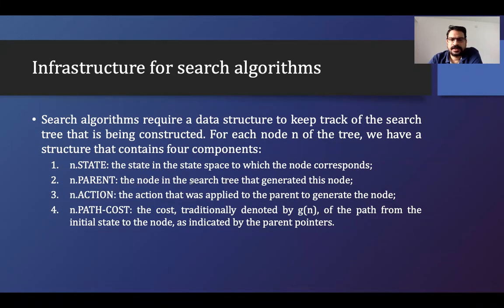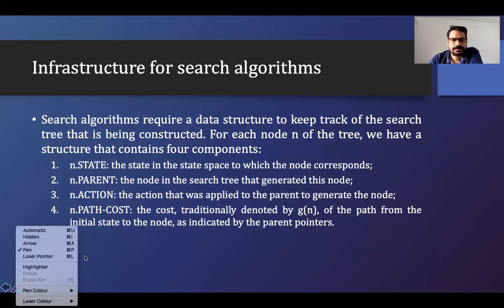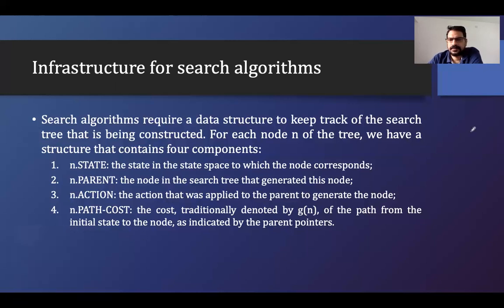The parent node is the node in the search tree that generated the current node. The third component is action — the action applied to the parent to generate the node. The fourth is node.path_cost, the cost traditionally denoted as g(n), which is the cost of the path from the initial state to the node as indicated by the parent pointers.